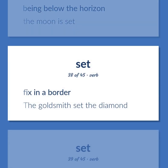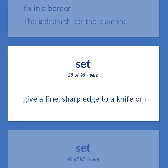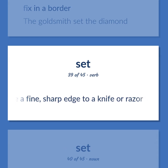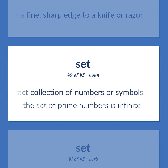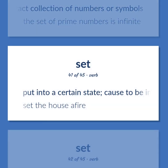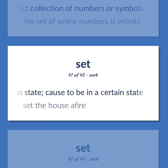Set: Fix in a border. Example: The goldsmith set the diamond. Give a fine, sharp edge to a knife or razor. Mathematics: An abstract collection of numbers or symbols. Example: The set of prime numbers is infinite. Put into a certain state; cause to be in a certain state. Example: Set the house afire.